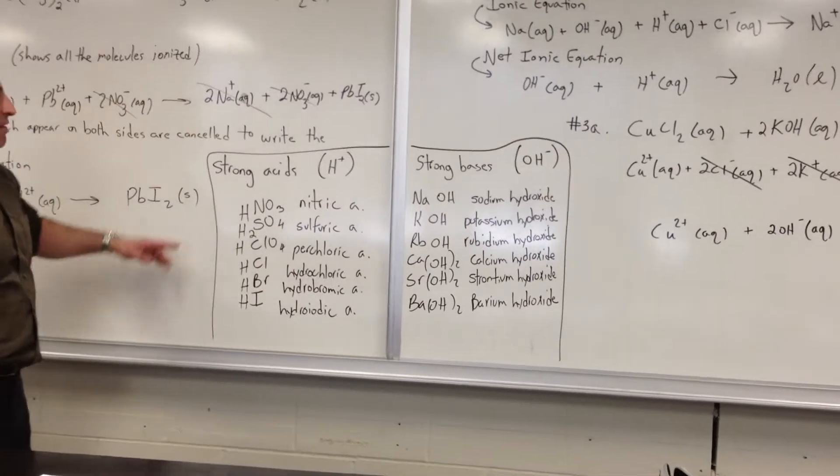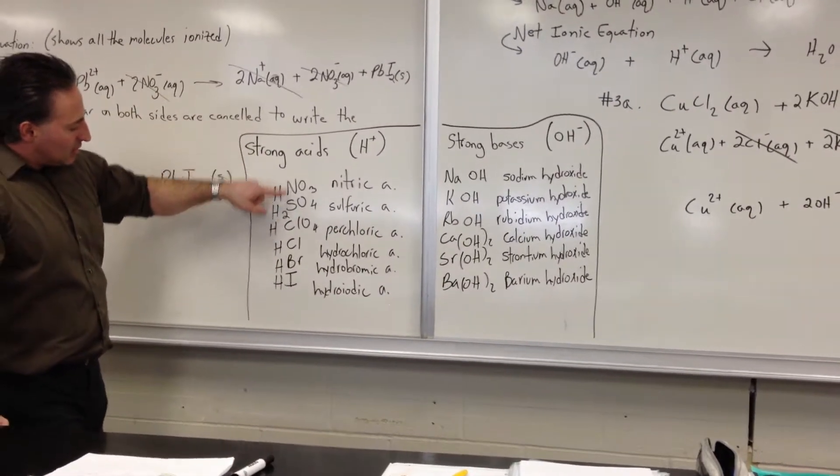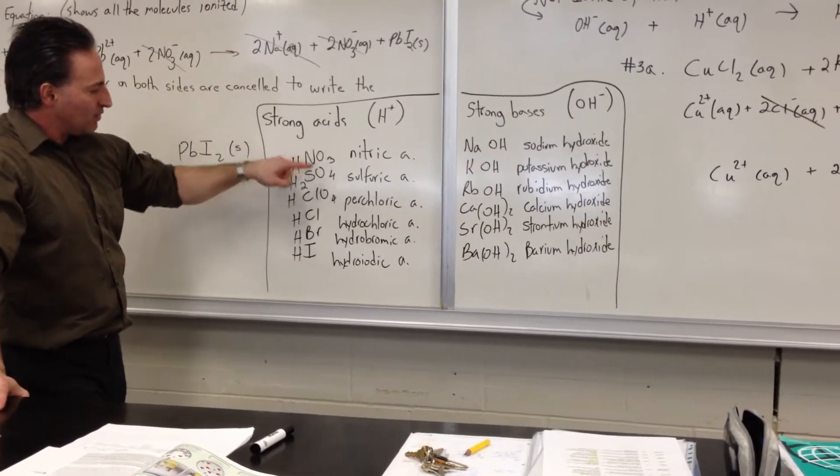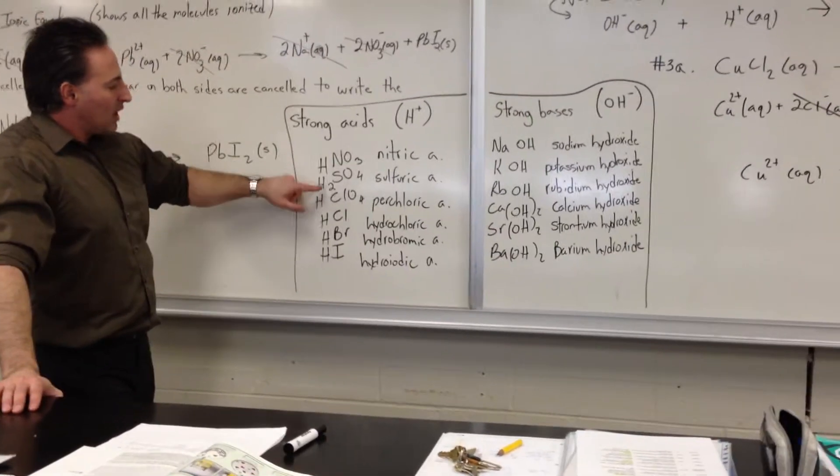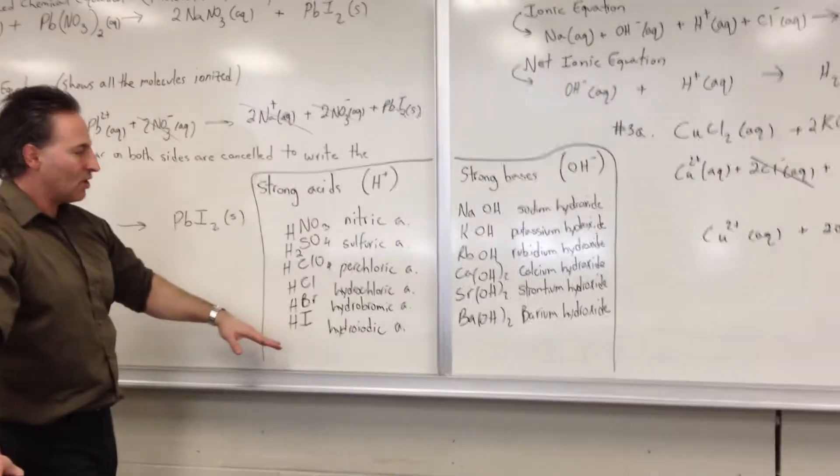There's a mnemonic you can use for memorizing strong acids. I use it all the time. You make the mnemonic: no, so, clock, hold, breathe. No, so, clock, hold, breathe. Then you write the numbers: three, four, four. You write an H in front of everyone. The only one that has two hydrogens is sulfuric. So those are the six strong acids.